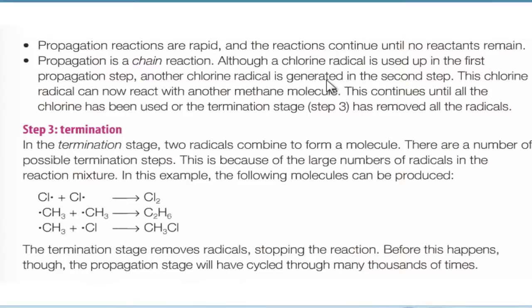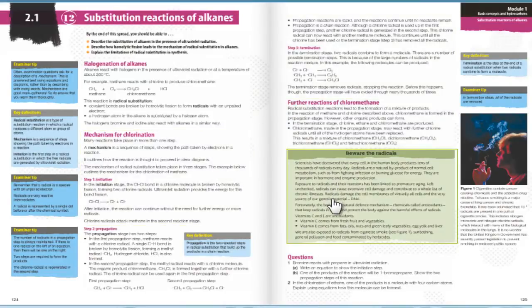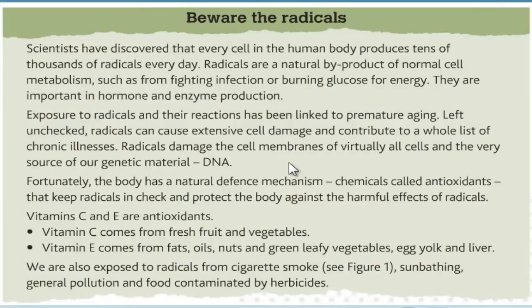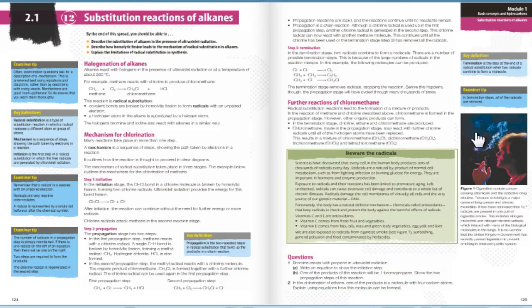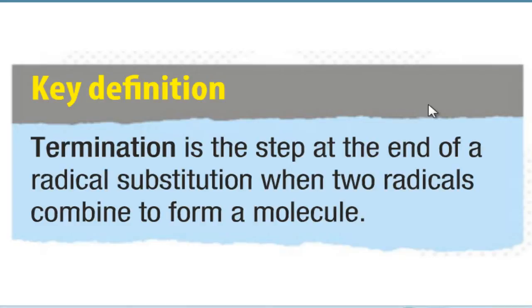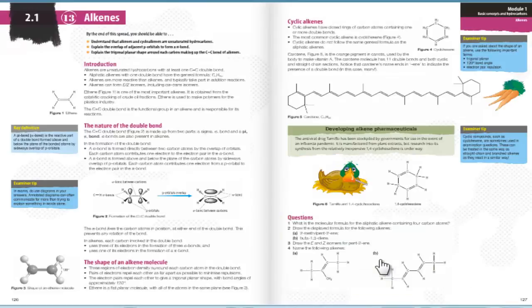Finally, it's termination. Cl plus Cl dot makes Cl2, and CH3 dot plus CH3 dot equals C2H6, and CH3 dot plus Cl dot is CH3Cl. This step removes the radicals and the propagation stage cycles through many, many times. Termination is the step at the end of a radical substitution when two radicals combine to form a molecule.